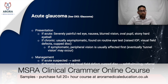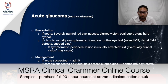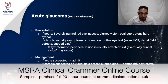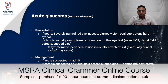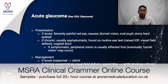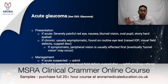Glaucoma presents in multiple ways depending on duration. Acute glaucoma should be spotted quickly in a question: severely painful red eye, nausea, blurred vision, oval pupil, and the classic stony hard eyeball. Thankfully it's quite rare, but it should stand out in a question. If acute glaucoma is described, admit to ophthalmology immediately.